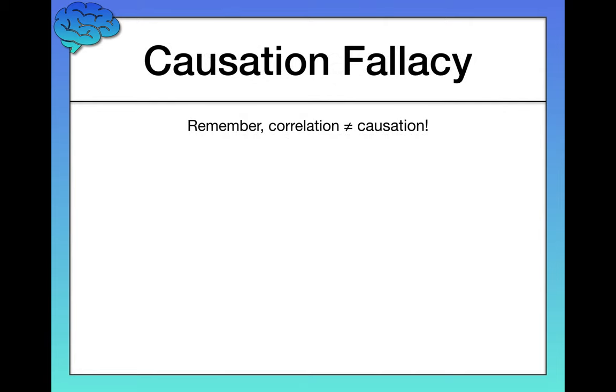Just because you see a correlation between two variables, this doesn't necessarily mean that those two variables are causally linked. Assuming that that's the case, mistakenly, is known as the causation fallacy, and this happens all the time.